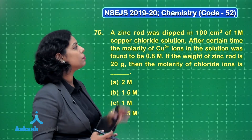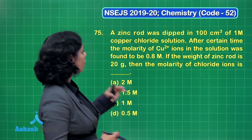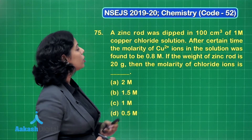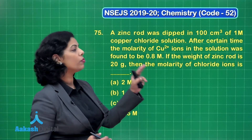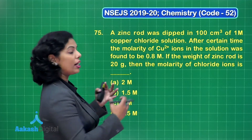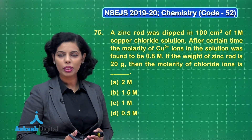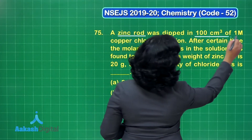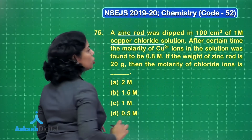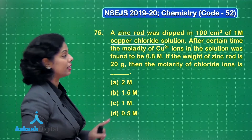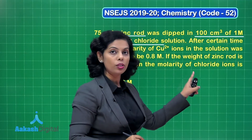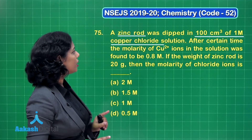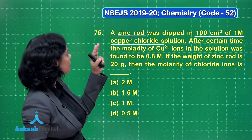Question number 75: a zinc rod was dipped in 100 cm³ of 1 M copper chloride solution. After some time, the molarity of Cu²⁺ ions was found to be 0.8 M. If the weight of the zinc rod is 20 g, what is the molarity of chloride ions? The key concept is that the only source of chloride ions is copper chloride.